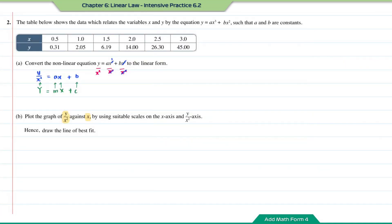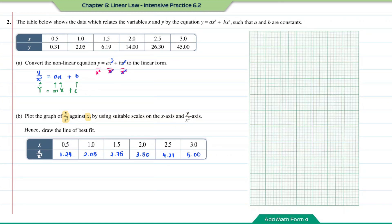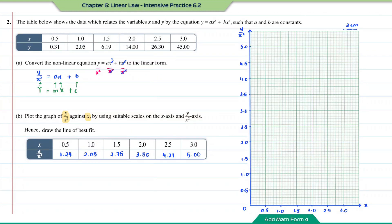Question B: plot the graph of y over x squared against x using a suitable scale on both axes, and draw the line of best fit. From the table we already have values of x and y, so we calculate y over x squared — for example, 0.31 divided by 0.5 squared, and so on — rounding to 2 decimal places. We use a scale of 2 cm to 0.5 unit on both axes. Plot the points and draw the line of best fit.